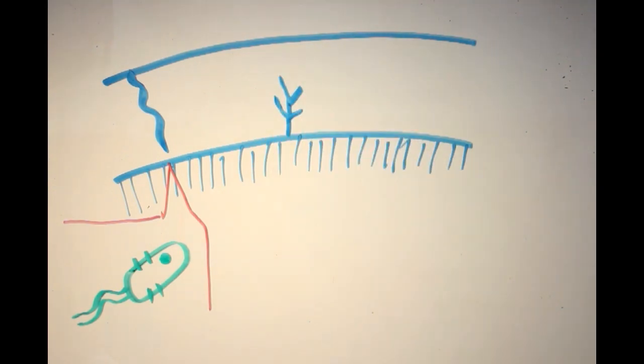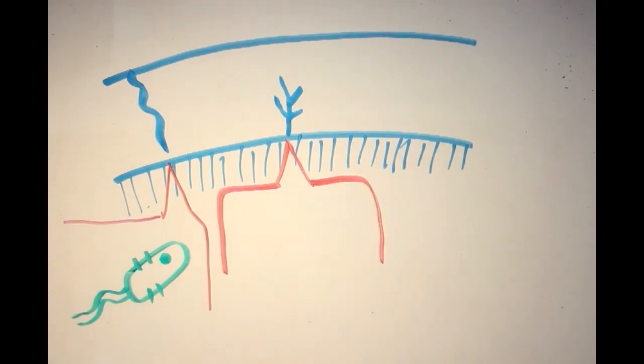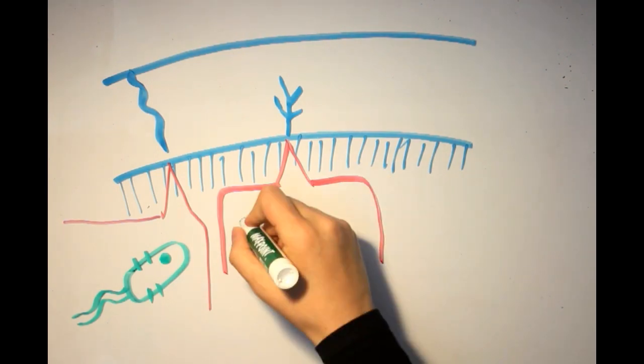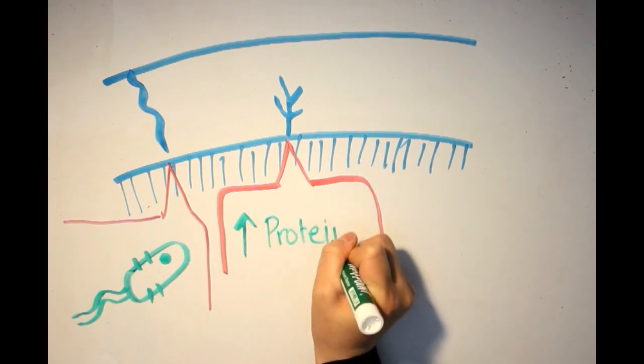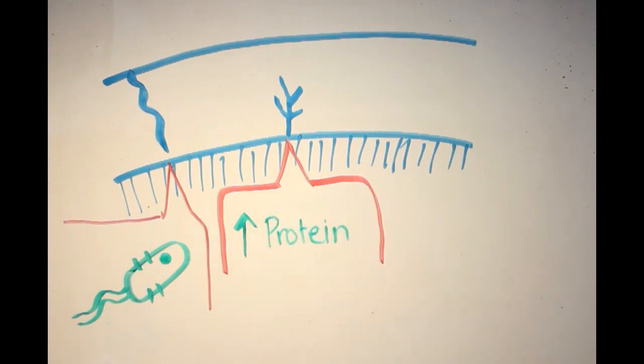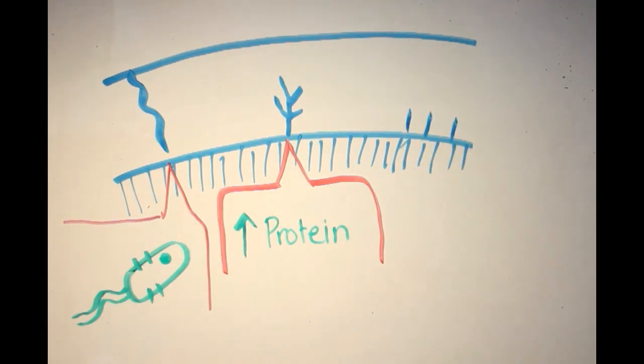Enamel tufts, on the other hand, are formed due to a change in the orientation of the rods. These tufts appear as branched, dark, short lines and exhibit high levels of protein. These tufts extend from the dentino-enamel junction into about one-tenth of the enamel thickness.